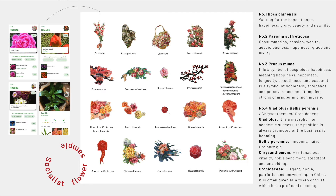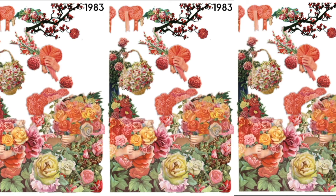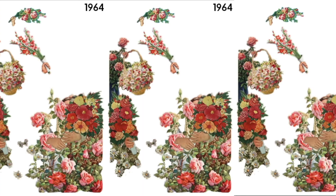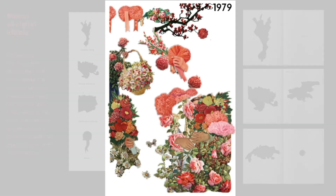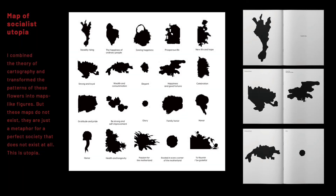I extracted many flowers from the same poster and then found their names, places of origin, and meanings using search software. I found that three kinds of flowers appear very frequently and they have different meanings, but interestingly, the same flower has different meanings in different pictures. I kept these flowers in the same position as the original imagery and superimposed them in chronological order to form a new image. Although they are still in the same place, their meaning and value also change. Another attempt was to combine calligraphy theory to transform these flower patterns into images similar to maps — maps that do not exist, used only as a metaphor for a perfect society that does not exist.